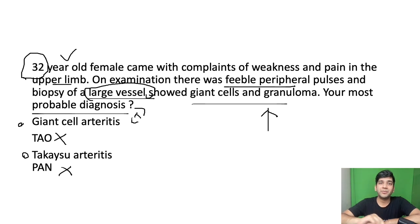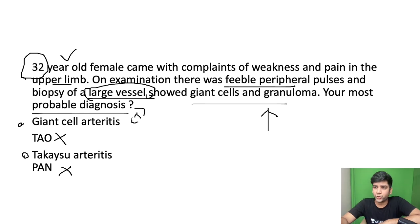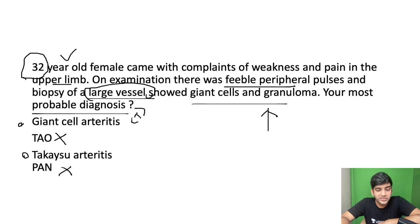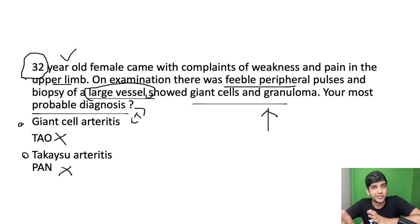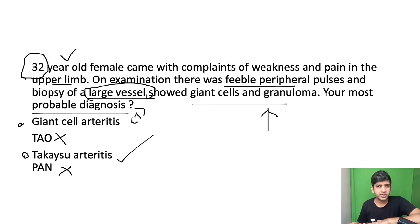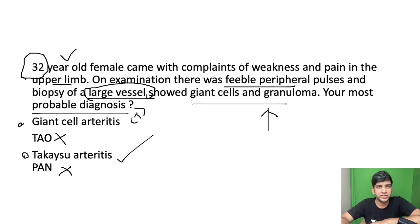Robbins clearly mentions that if you have giant cells and granuloma in a large vessel biopsy, there are only two possibilities: Takayasu and giant cell arteritis. Robbins says that if the patient is less than 50 years, incline towards Takayasu arteritis — that's what we do in real life as well. A large vessel biopsy showing granulomas in a patient less than 50 years means Takayasu arteritis.